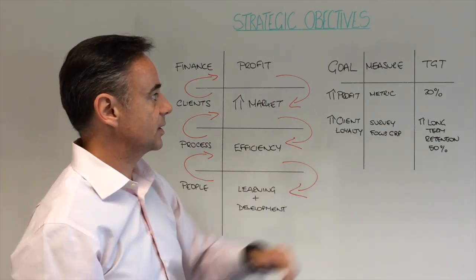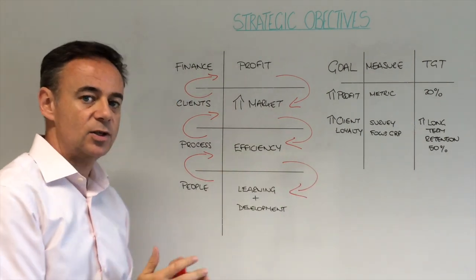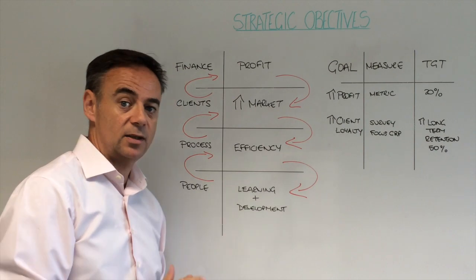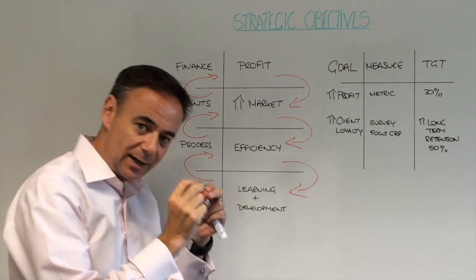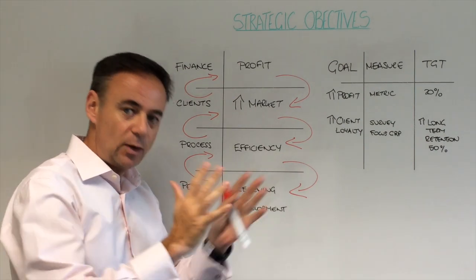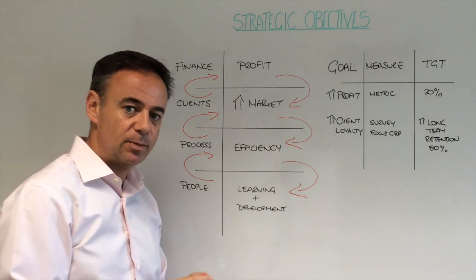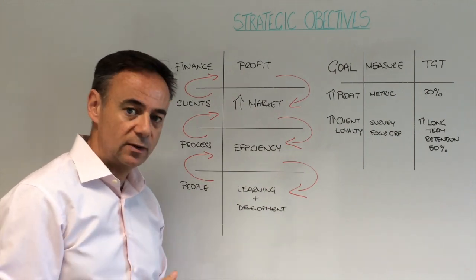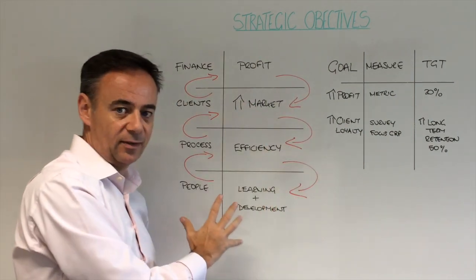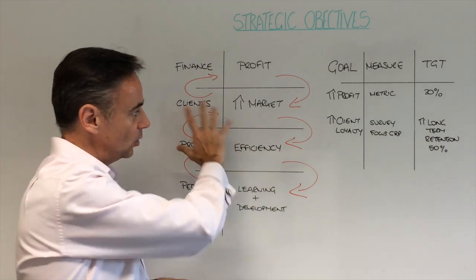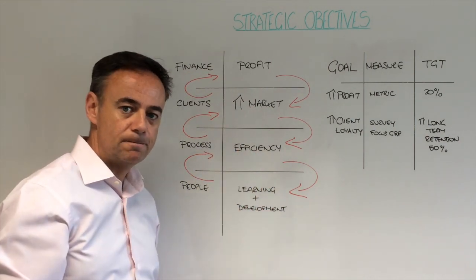So my top tip for you when putting together strategic objectives for your business is to look at it holistically. Get away from the silo mentality of business planning, and look at it from a strategic point of view about how it all fits together and how it's all interlinked. That's a very, very powerful proposition.